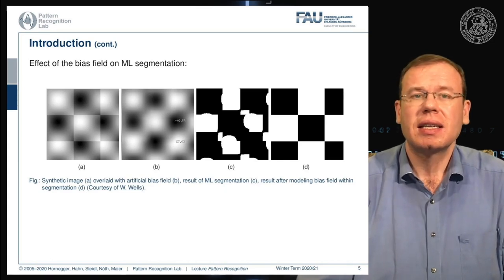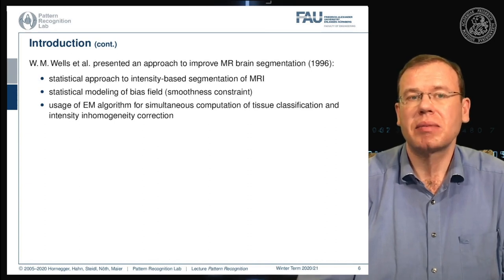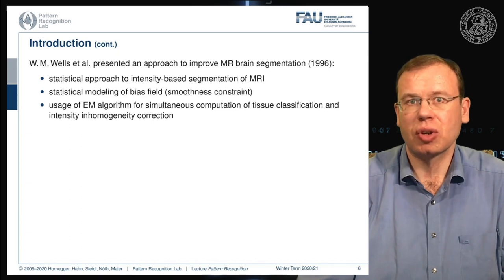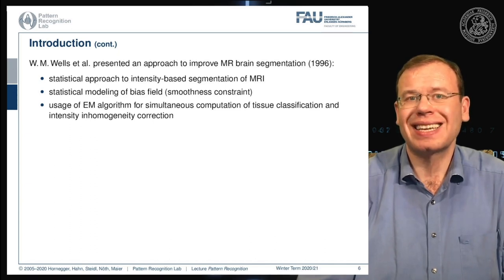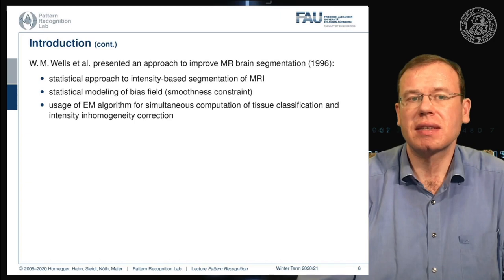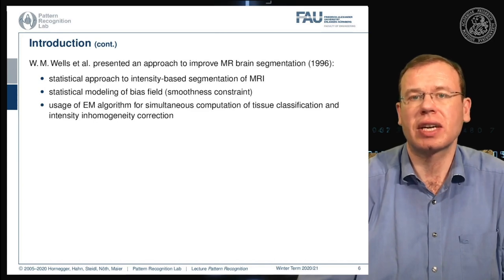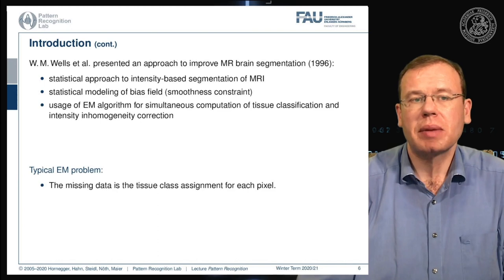We have methods to deal with this. Going back to the work of Sandy Wells, presented in a 1996 paper, this is essentially a statistical approach to intensity-based segmentation in MRI. It models the bias field statistically using a smoothness constraint, and uses the EM algorithm for the simultaneous computation of tissue classification and intensity inhomogeneity correction.